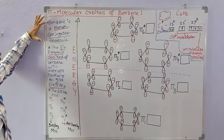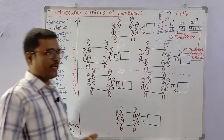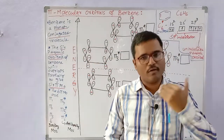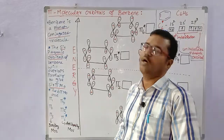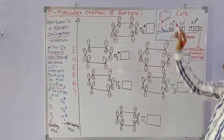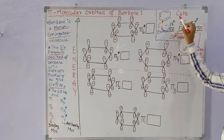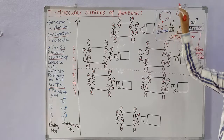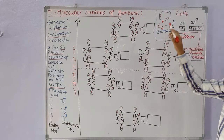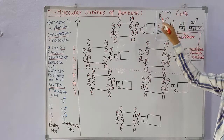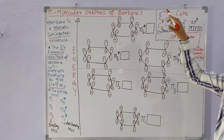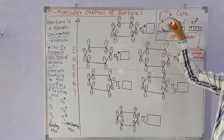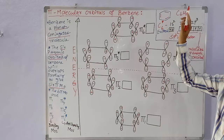Benzene is a planar conjugated molecule. Its molecular formula is C6H6 and it is an organic compound having a hexagonal ring. In the hexagonal ring there are 3 pi bonds and 3 sigma bonds.